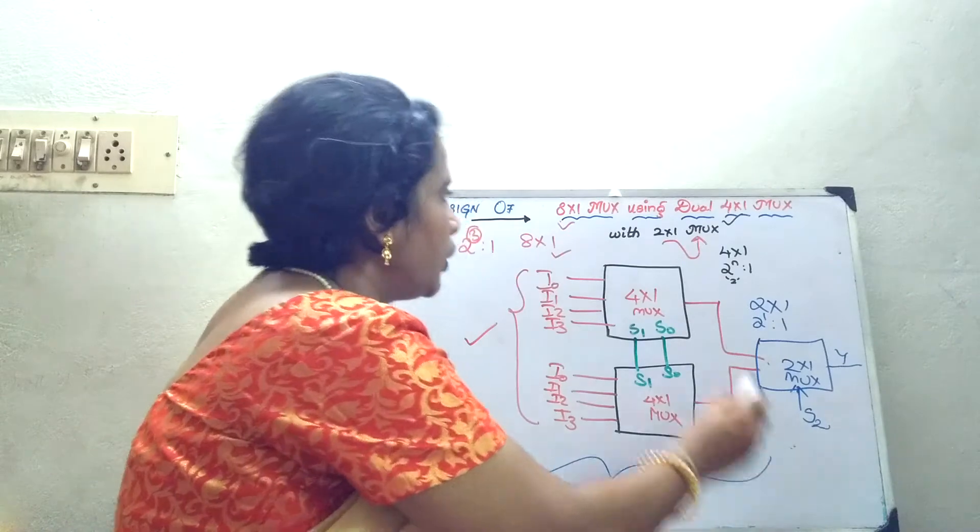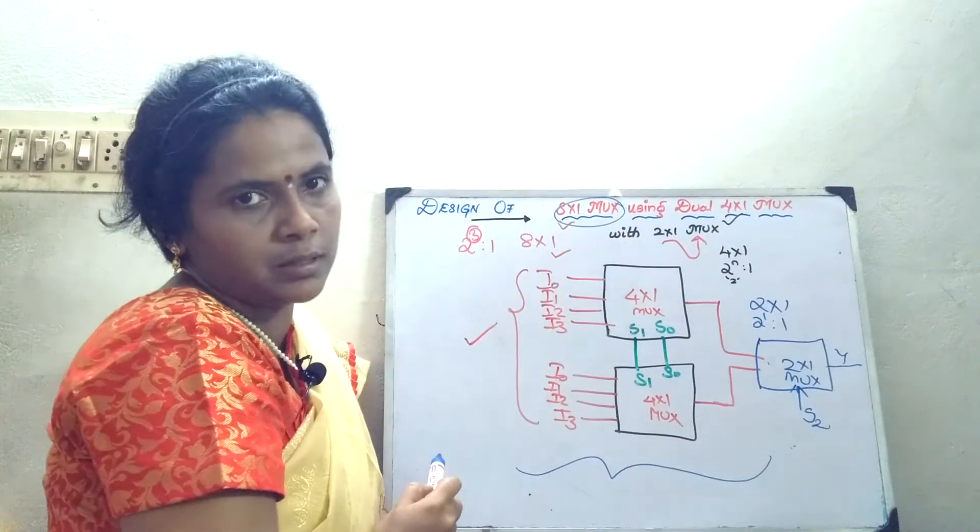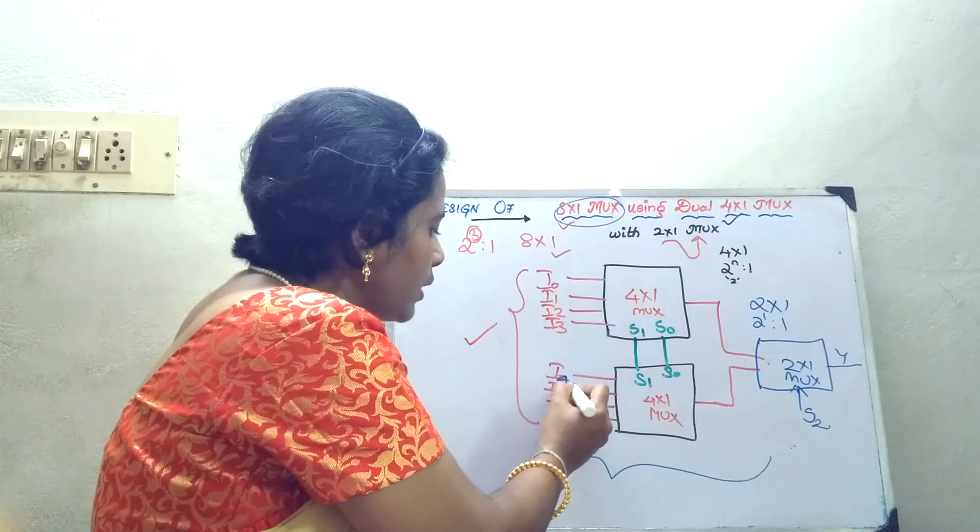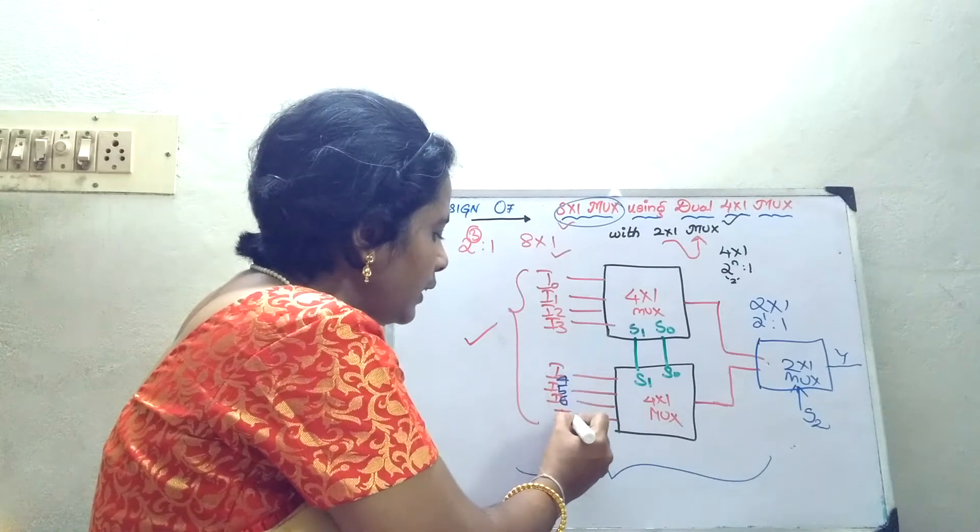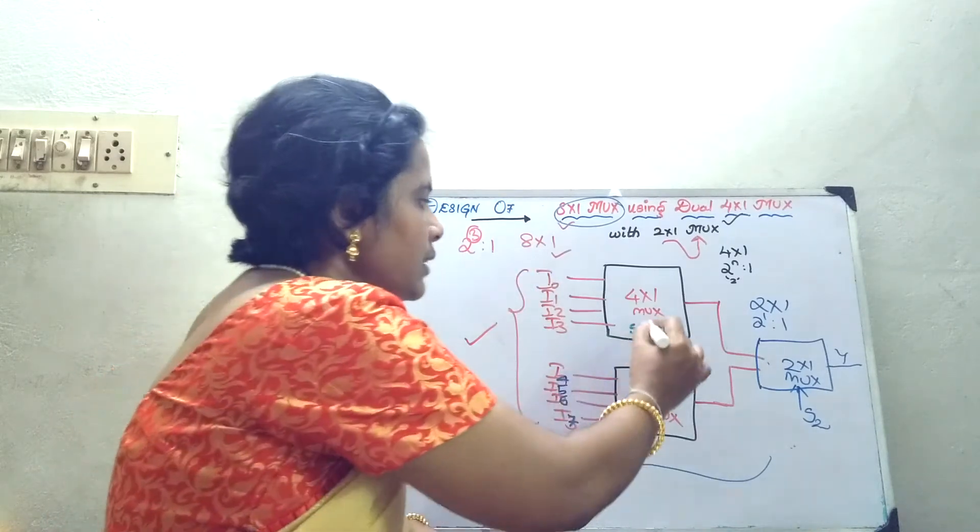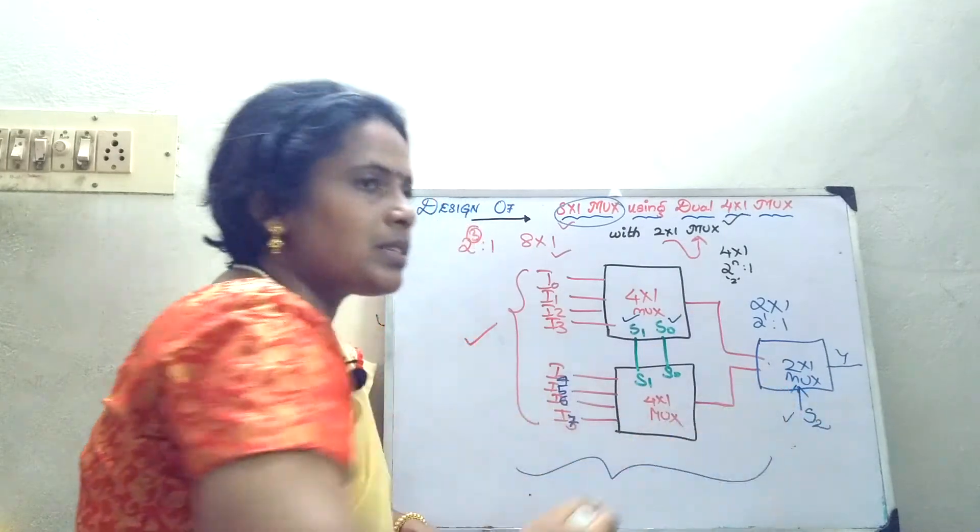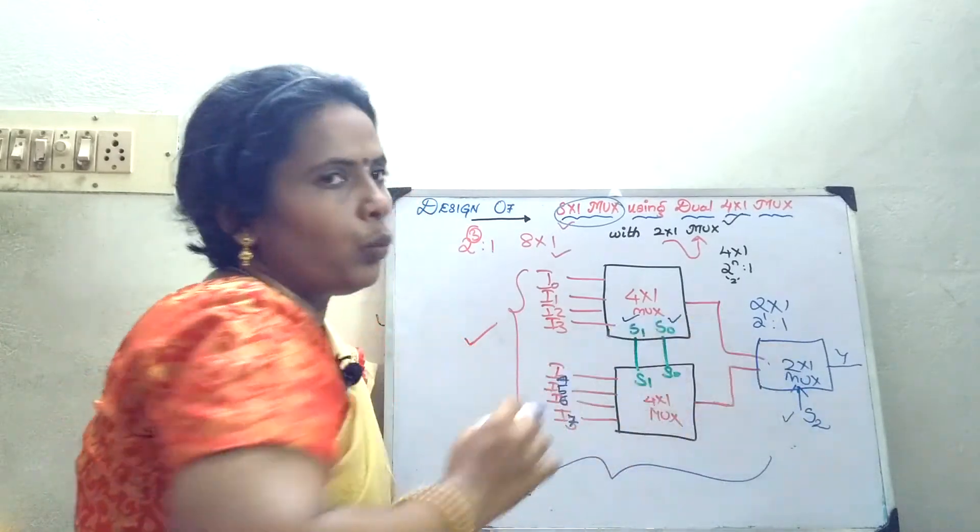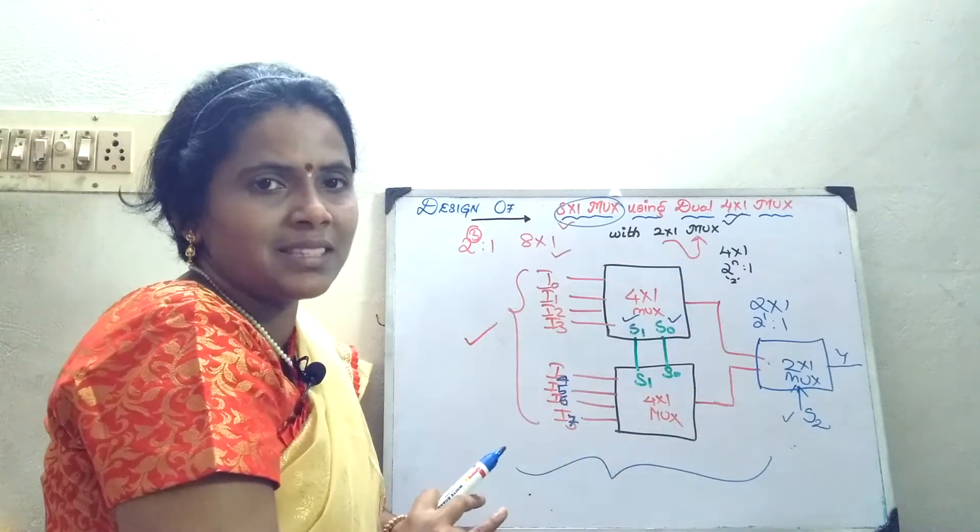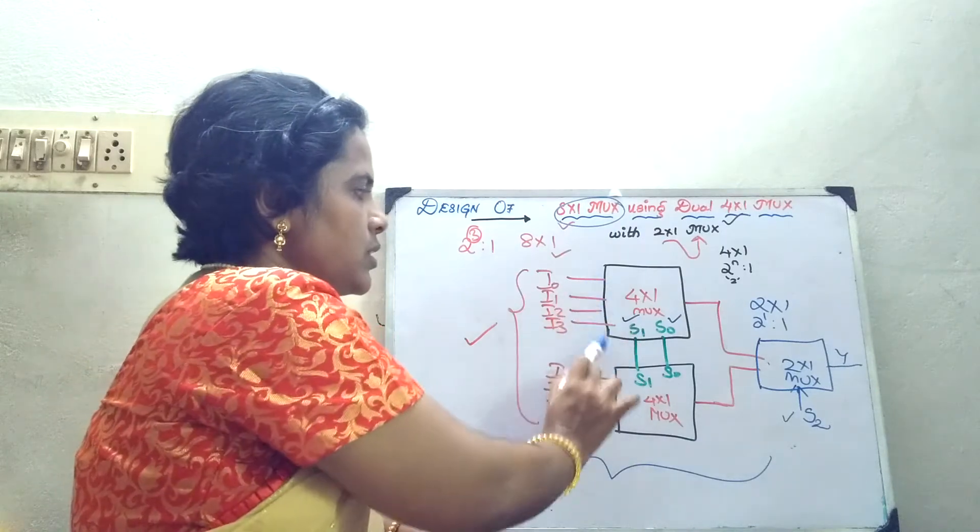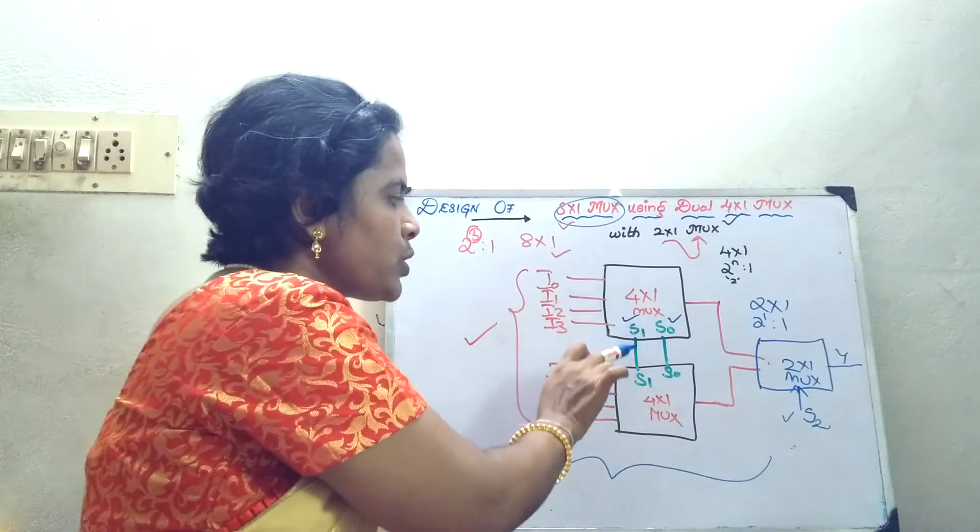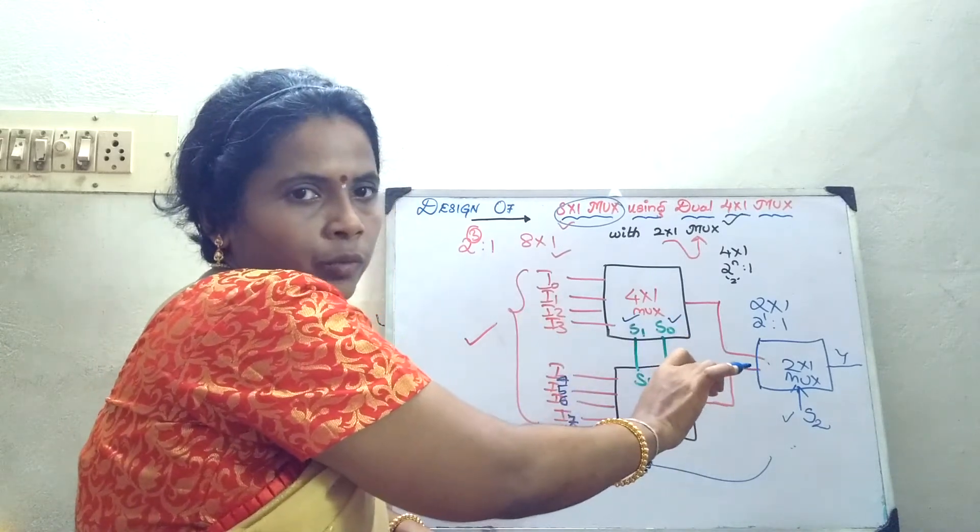Now you integrate everything in order to design your 8 cross 1 mux. How many inputs you have now? If you want to be more specific, I can also write I4, I5, I6 and I7. So now you have the inputs as 8 inputs, select lines S naught, S1 and S2. So 3 select lines you have and 1 output line. With this the how to draw the circuit diagram gets completed.